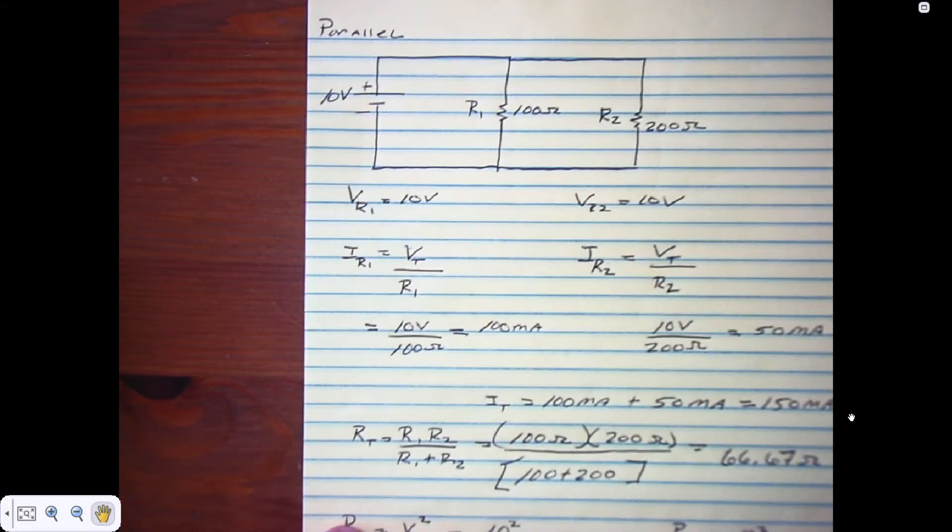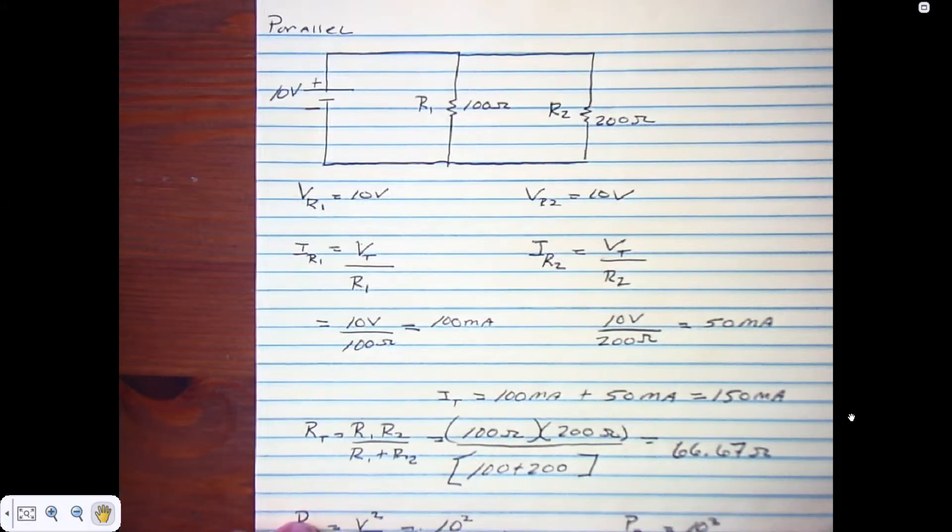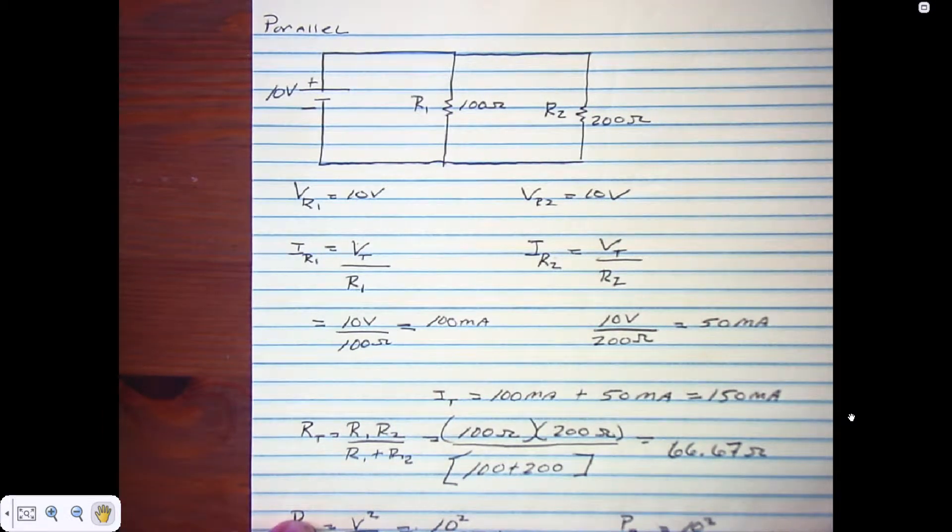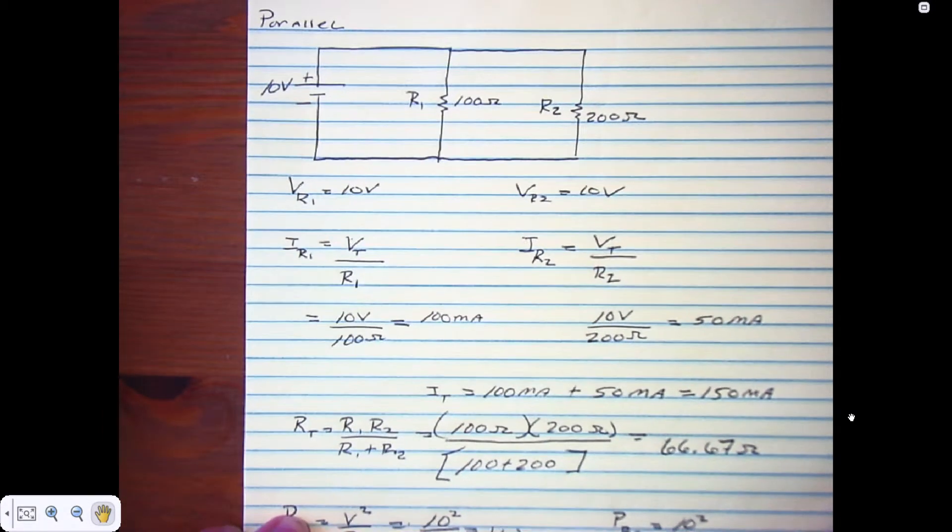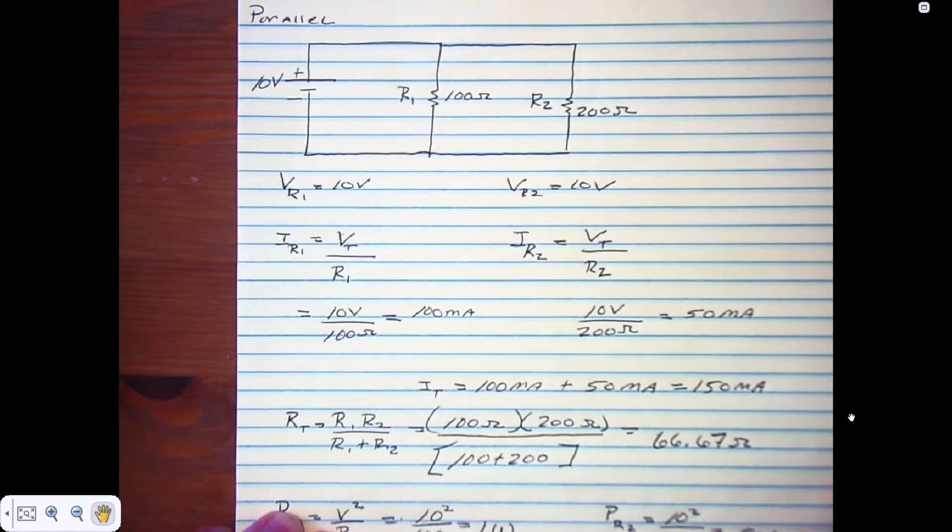All right, so the first part we discussed a little bit of the basis of a parallel circuit. Now I want to throw in an example and how to solve for some of the values that we want to obtain, such as voltage, current, power, and total resistance.